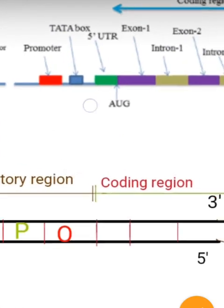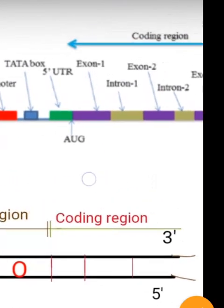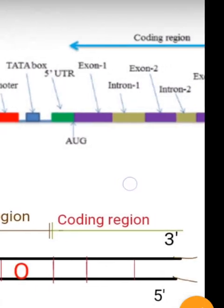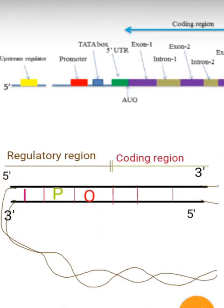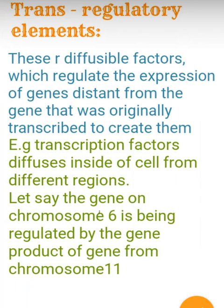So the cis regulatory elements have a quite simple structure — for example, the promoter lies beside the gene and helps in transcription of the gene. These cis regulatory elements maintain gene expression by directly interacting with the gene itself.